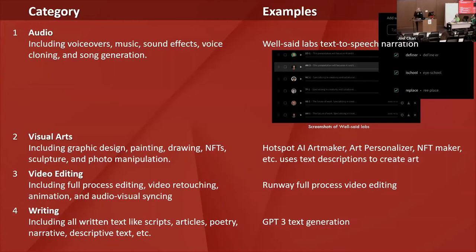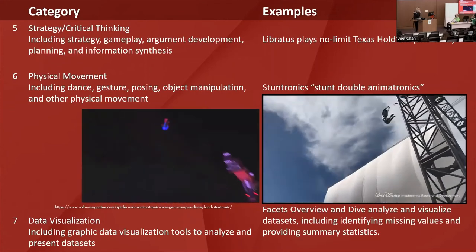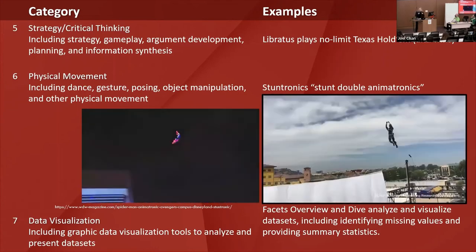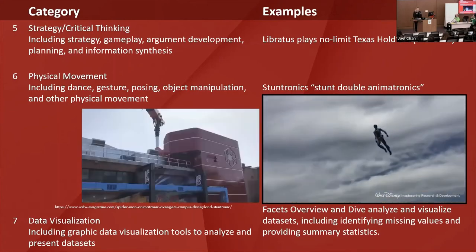These are the categories, still being refined — a sampling of creativity that AI is capable of. They include audio and visual arts, video editing (separated because it includes facets of both and is always treated separately in job and technology descriptions), writing, strategy and critical thinking, and physical movement. For physical movement, one example is Disney's use of AI called Stuntronics, which takes on jobs that are dangerous for humans — in their California park, AI performs stunts for the Spider-Man character.